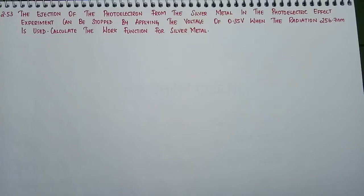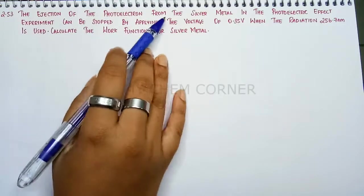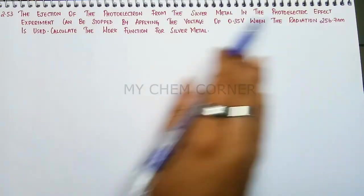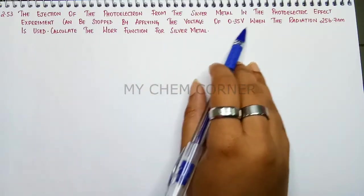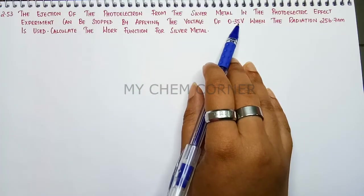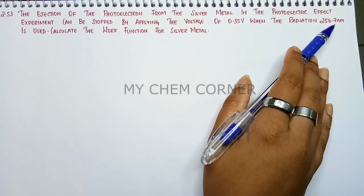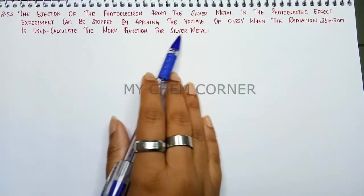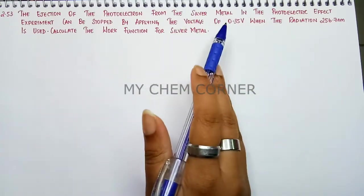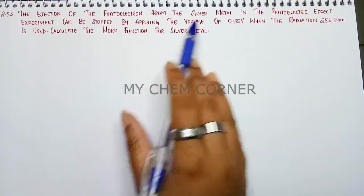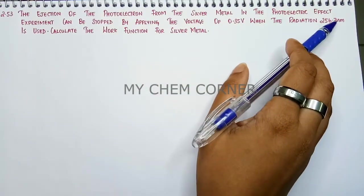Our next question is 2.53. It says the ejection of photoelectron from silver metal in a photoelectric effect experiment can be stopped by applying a voltage of 0.35 volt when radiation of 256.7 nanometer is used. Calculate the work function for the silver metal. What is given to us: one voltage, and second, wavelength in terms of nanometer.